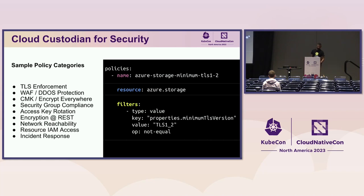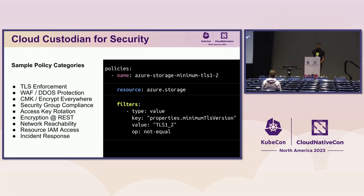Security has always been one of the core use cases. It allows you to do all kinds of things: making sure everything's encrypted with customer-managed keys, making sure things are accessible from the network, and that resources with embedded IAM policies are only accessible to the right audience. It also enables incident response. It ties into the cloud providers' native tools — AWS Security Hub or Google Cloud Security Command Center — to use them for enforcement and remediation. For example, you might get a notification from GuardDuty that an instance has been popped, and you'd remove its IAM role, take a forensic snapshot, and shut it down.